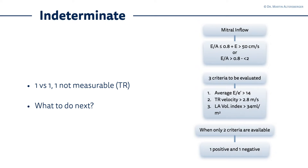You cannot measure the third criteria. To recall: we have the mitral inflow — the e/a ratio below or equal to 0.8 plus the e maximal velocity above 50 cm/s, or simply the e/a ratio above 0.8 but below 2. The three criteria to be evaluated are: the average e/e' above 14 (pathological), the TR velocity above 2.8 m/s (pathological), and the left atrial volume index above 34 mL/m² (pathological).